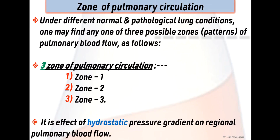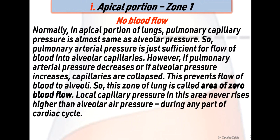Pulmonary vascular pressure varies in different parts of the lungs. Under different normal physiological and pathological lung conditions, one may find any one of three possible zones: zone 1, zone 2, and zone 3. This is the effect of hydrostatic pressure gradient on regional pulmonary blood flow.